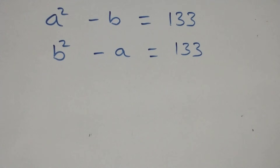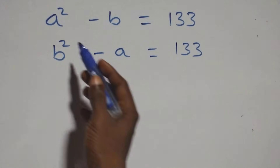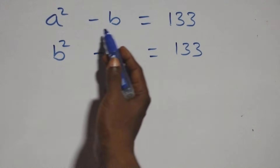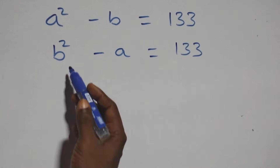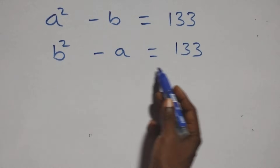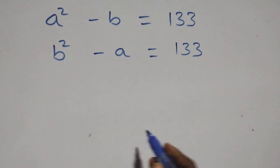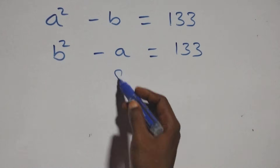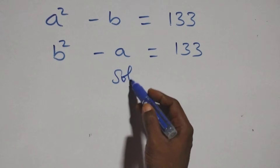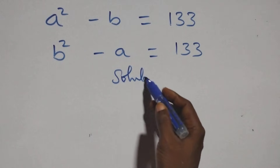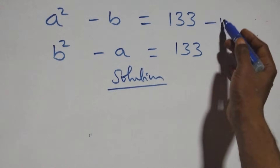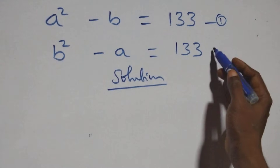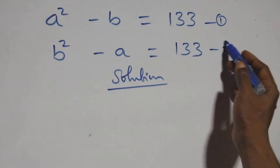Hello, you're welcome. How to solve this nice system of equations: a squared minus b equals 133, b squared minus a equals 133. Let's label this as equation 1 and this as equation 2.